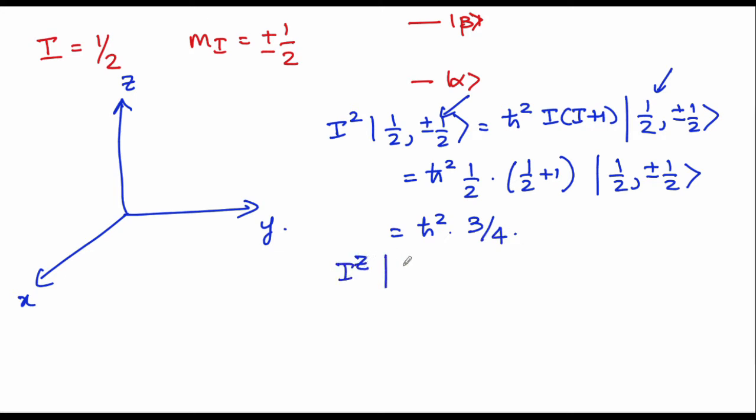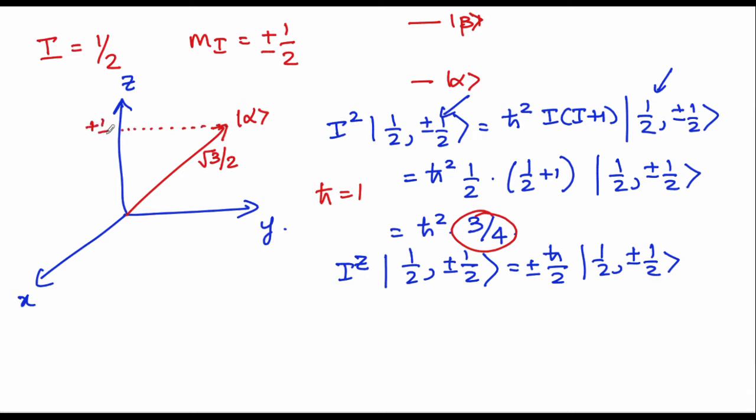And Iz on the same state is going to give you h cross by 2 with a plus minus depending upon the state you are interrogating because that is sensitive to Mi. Therefore, you have a vector for one state. Let us take alpha state whose magnitude is going to be square root - basically, this is going to be the I vector. It is going to be the square root of what you ended up getting here. Once again, for the sake of simplicity, let us put h cross to 1. You are going to get square root of 3 by 2. The z projection of this is going to be plus half. On the other hand, and remember we have applied B naught along z, the beta state is going to have a projection of minus half and the length of the vector remains square root of 3 by 2.